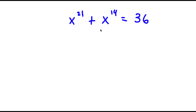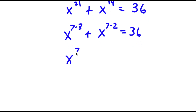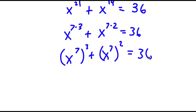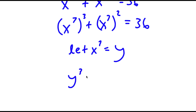In this problem I have x to the power of 21 plus x to the power of 14 is equal to 36. I'm first going to rewrite this as x to the power of 7 times 3 plus x to the power of 7 times 2 equals 36, then as x to the power of 7 to the power of 3 plus x to the power of 7 to the power of 2 equals 36. I can let x to the power of 7 equal the variable y, so now I have y cubed plus y squared equals 36.